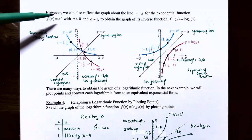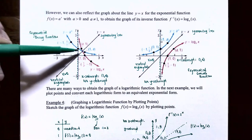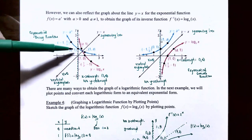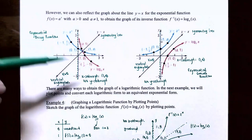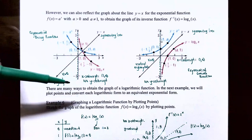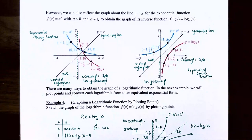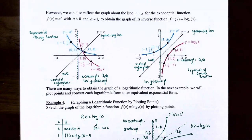If you want to graph a logarithmic function, you can reflect the graph of the exponential function about the line y equals x. For an exponential function f of x equals base a to the x, where a is greater than 0 and not equal to 1, you obtain the graph of its inverse f inverse of x, which is log base a of x. For the exponential decay function, the base is between 0 and 1 — reflecting it across the line y equals x gives the logarithmic function log base a of x. Notice there is a vertical asymptote at x equals 0, no y-intercept, an x-intercept at 1 comma 0, and the graph continues to decrease as you go to the right.